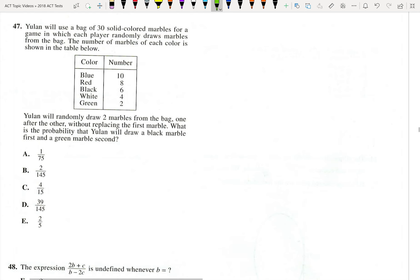What's nice about number 47 is we can just use our real-world brains to solve it. They tell us there's 30 colored marbles in the bag, and they want to know what is the probability that we draw a black marble and then a green marble second.